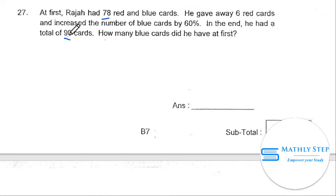So after this, the total number of cards became 90. Actually, he has more cards. The number of increase is 90 minus 78, which is equal to 12 cards.